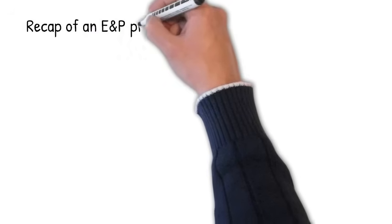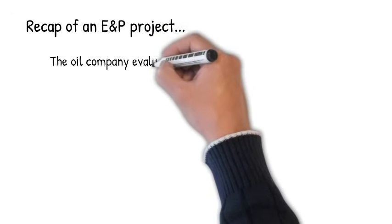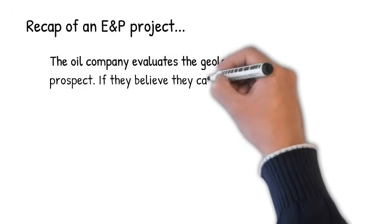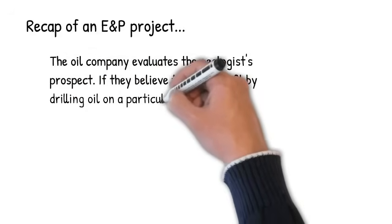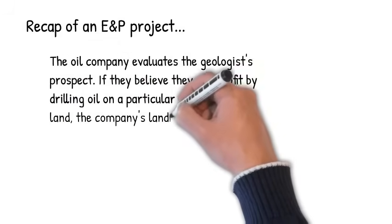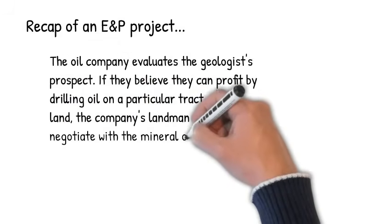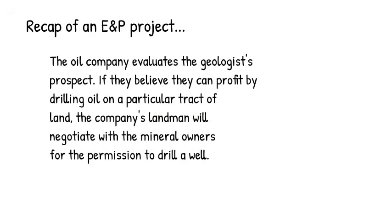Here is a recap of an E&P project so far. The oil company evaluates the geologist prospect if they believe they can profit by drilling oil on a particular tract of land. The company's landman will negotiate with the mineral owners for the permission to drill a well.